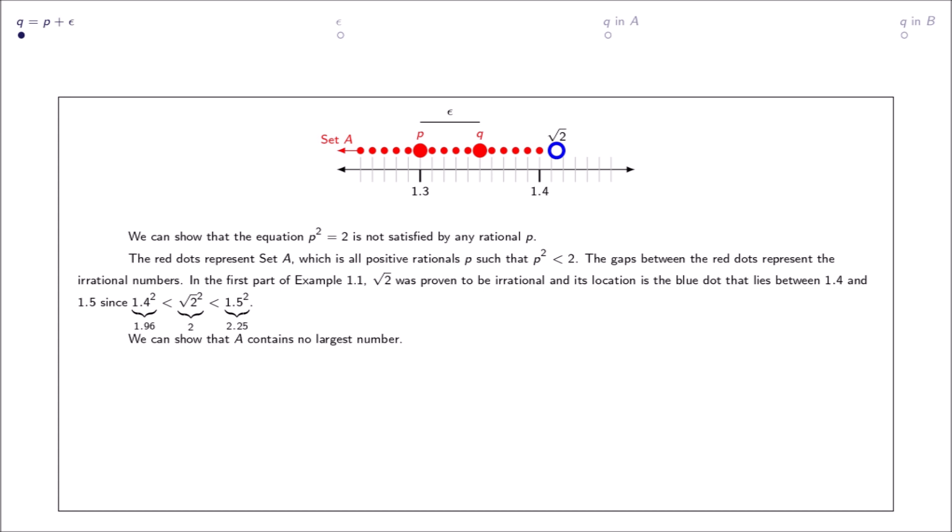We can show that A contains no largest number. More explicitly, for every p in A, we can find a rational q in A such that p is less than q.